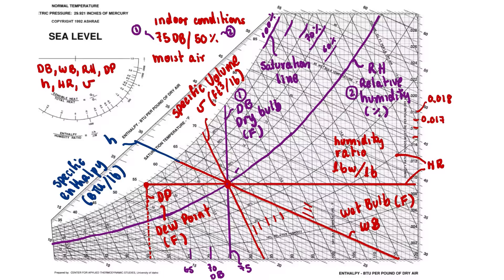A couple of historical facts about the psychrometric chart: it was pioneered by Willis Carrier, who is considered the father of air conditioning. It was also developed in combination with Richard Mollier. Together, both contributed to the psychrometric chart as we know it today, back in the 1900s.